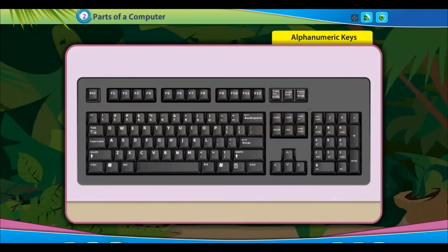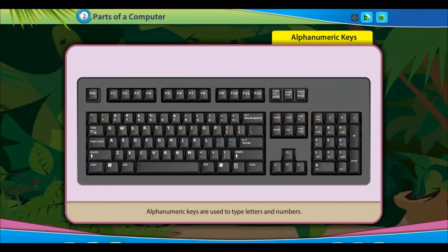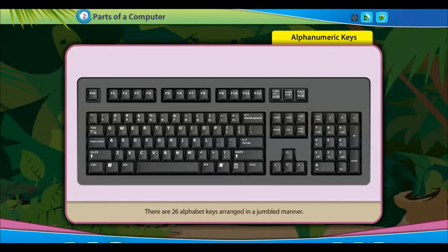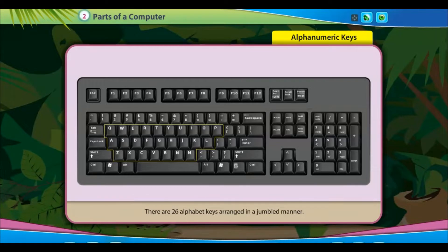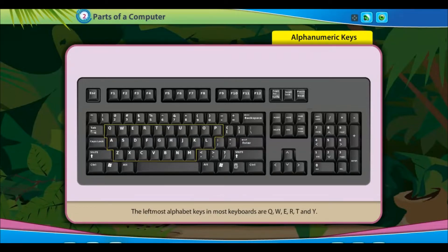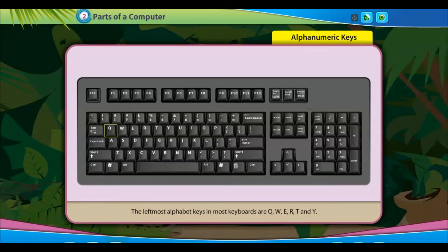Alpha Numeric Keys are used to type letters and numbers. There are 26 alphabet keys arranged in a jumbled manner. The leftmost alphabet keys in most keyboards are Q, W, E, R, T and Y.